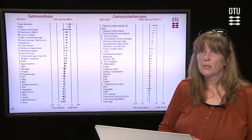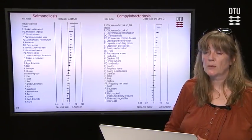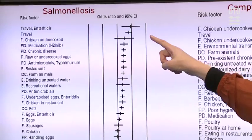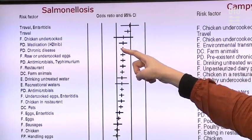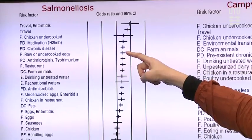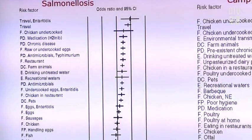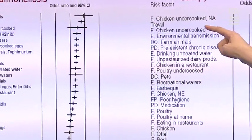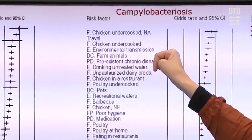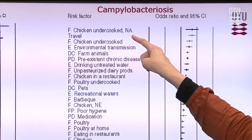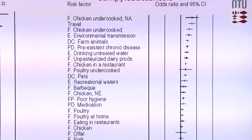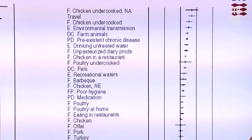Two such systematic reviews have been conducted — for salmonellosis and campylobacteriosis respectively — based on multiple studies. For salmonella, one of the most important sources across studies was travel, along with predisposing factors like medication or chronic disease, and eating raw or undercooked eggs. For campylobacter, undercooked chicken and travel emerged as significant risk factors. A specific analysis was also conducted for North America data, as many studies came from that region. Chicken undercooked, travel, and chicken undercooked overall all came out as significant risk factors when data from all studies were pooled.